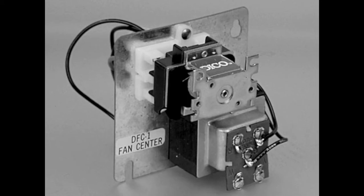So this is an example of a fan center. If you look at it, you can see your transformer down on the bottom right with a terminal block on top of it. Up top is your relay that's inserted into a white plastic junction box or plug.